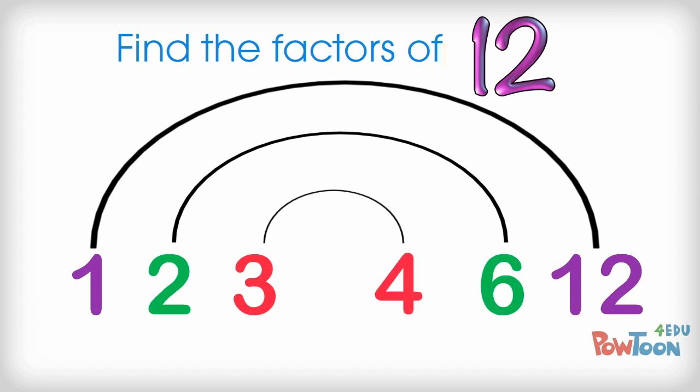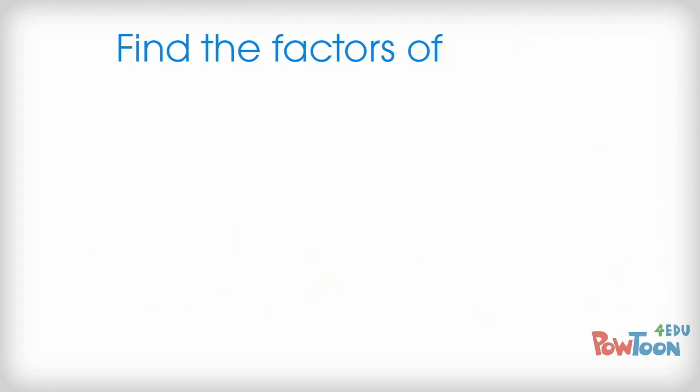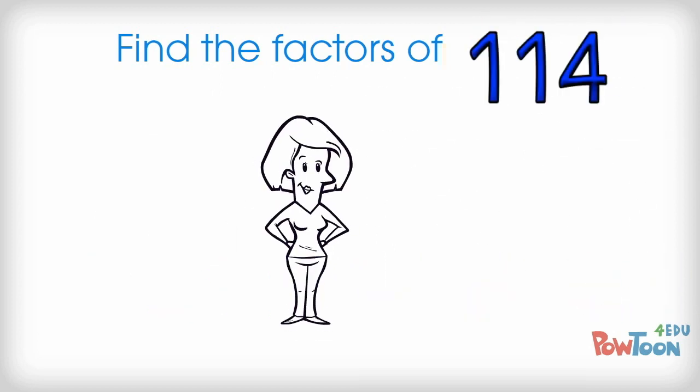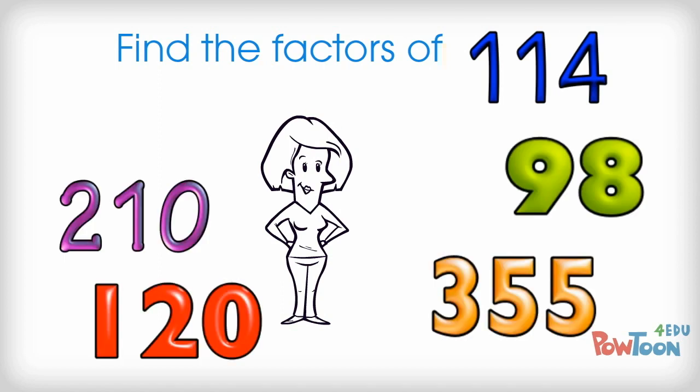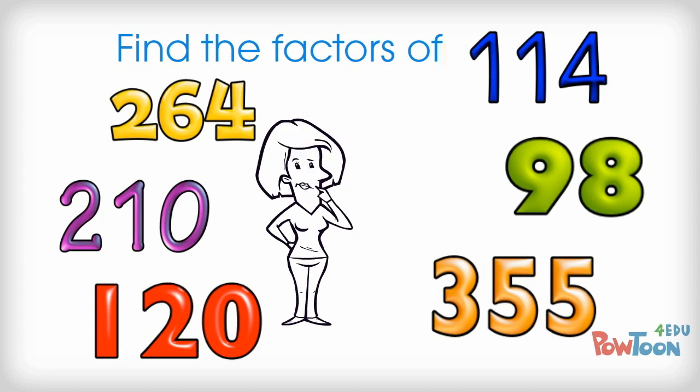And that's great when it's a value that doesn't have many factors, like we see here. But when you get a bigger number that has a lot of different factors, a lot of different ways of multiplying up to our given number, then the arc method becomes clumsy on the page and may be confusing with a lot of arcs drawn.